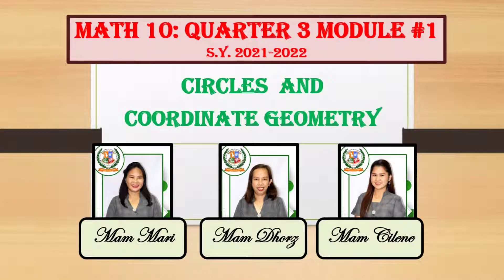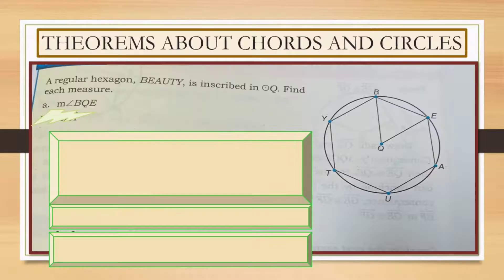Hello, grade 10. We are now in our quarter 3, module number 1, for our school year 2021 to 2022. So we are already in our third quarter. Our first topic will be circles and coordinate geometry. Ma'am Marie, Ma'am Doris, and Ma'am Celine will be your teachers for this quarter. For our module number 1, we will be discussing theorems about chords and circles. Remember that in plane geometry, a chord is the line segment joining two points on a curve, whose ends lie on a circle.